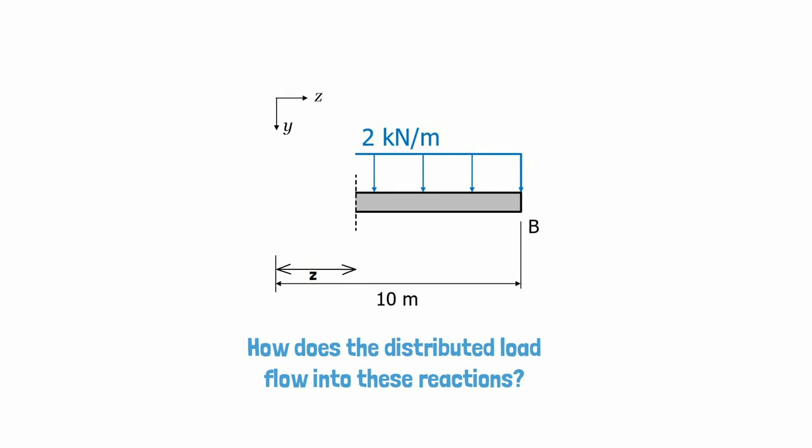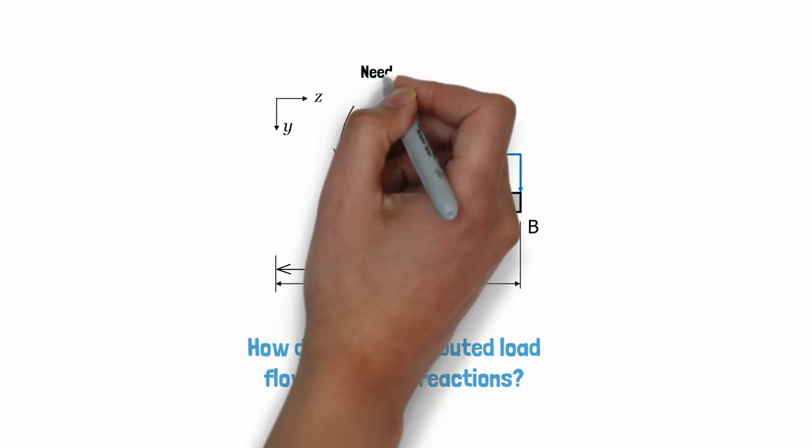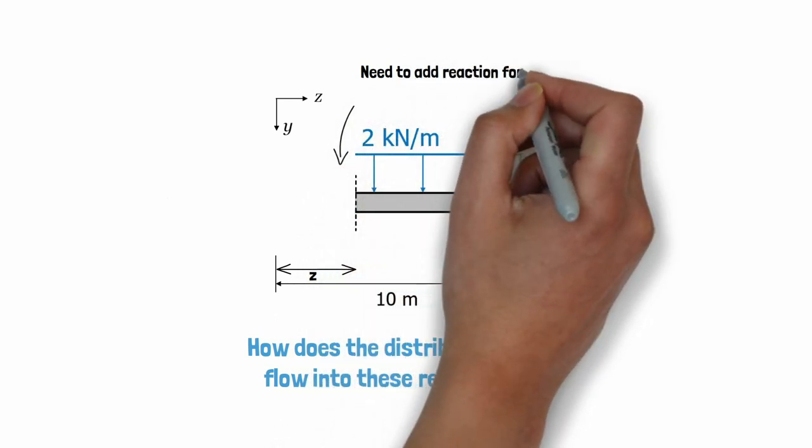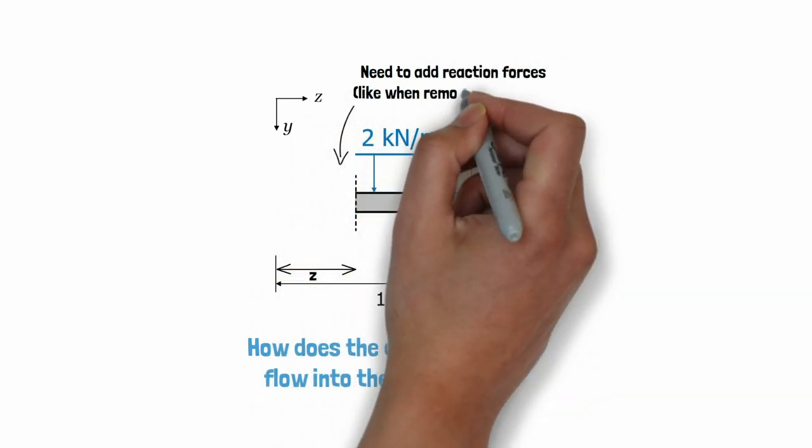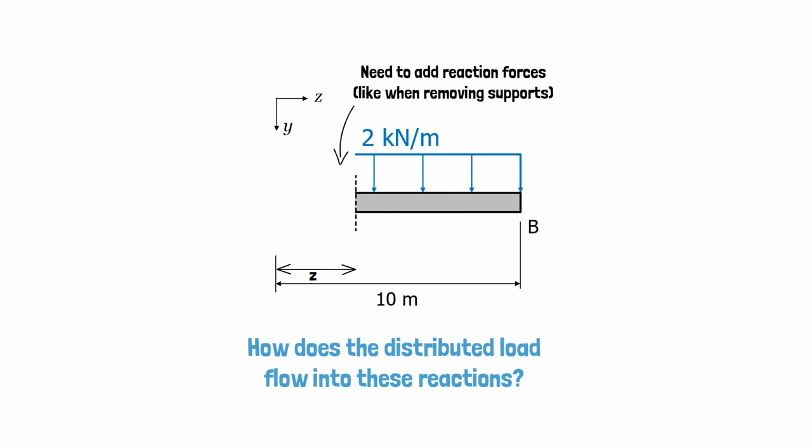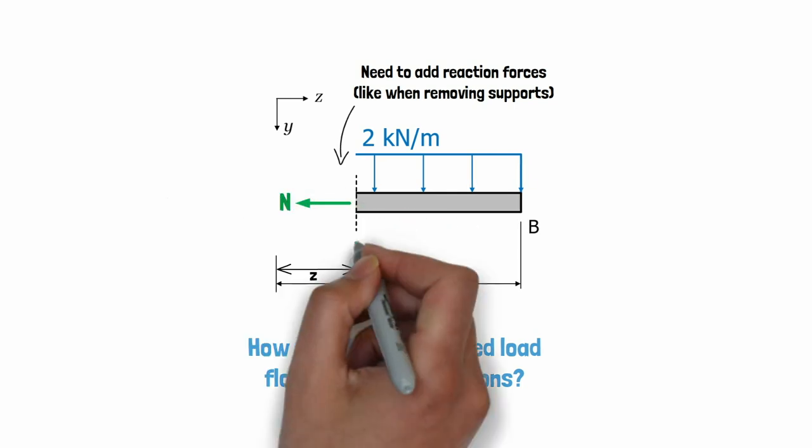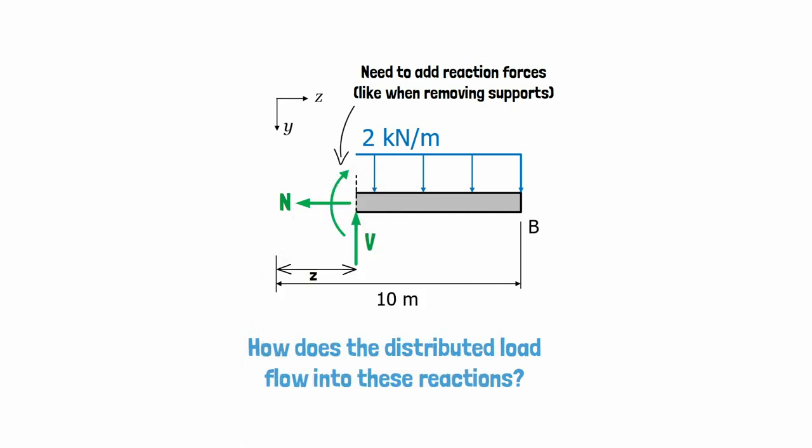Since we cut into the beam, we need to think about the possible internal reaction forces that could be exposed at the cut surface. You can approach this the same way we did for determining the reaction forces at supports, by examining the degrees of freedom of the beam that are constrained. As the two sides of the beam cannot translate or rotate relative to each other, we need to add a normal force, shear force, and bending moment in order to properly constrain our segment of the beam.